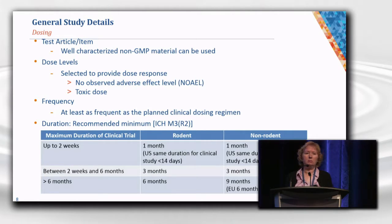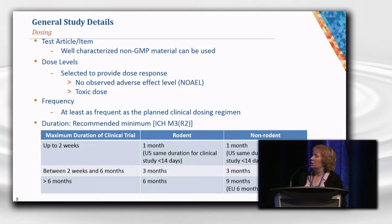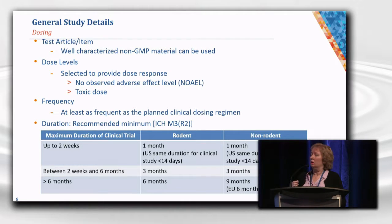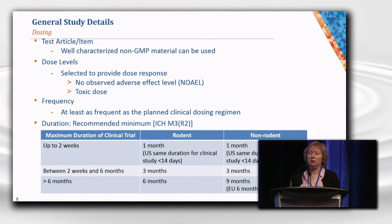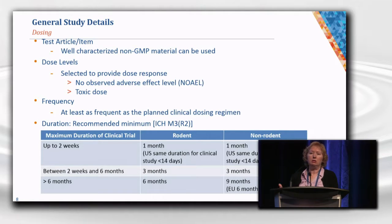For dosing, it's great to use GMP material because then you're qualifying your clinical material, but you can use non-GMP material for early studies as long as it's well qualified. Dose levels need to range from a no-adverse-effect level up to a toxic dose — a clean tox study is not really a good tox study; you need to show some effects. The dose frequency needs to be at least as frequent as what you plan to do in the clinic. Duration is reflective of clinical plans: up to two weeks of clinical dosing requires a one-month tox study; two weeks to six months requires a three-month study; and beyond that, chronic dosing studies are needed.